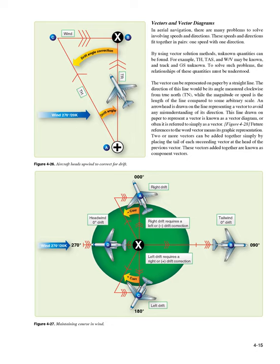The vector can be represented on paper by a straight line. The direction of this line is its angle measured clockwise from true north, while the magnitude or speed is the length of the line compared to some arbitrary scale. An arrowhead is drawn on the line to avoid any misunderstanding of its direction. This line drawn on paper to represent a vector is known as a vector diagram, or often referred to simply as a vector. Figure 4-28. Future references to the word vector mean its graphic representation.